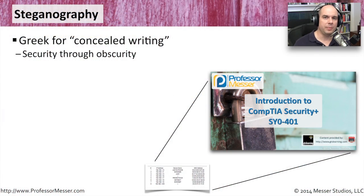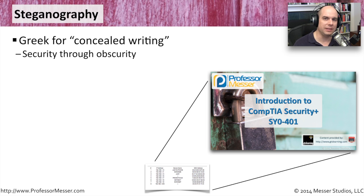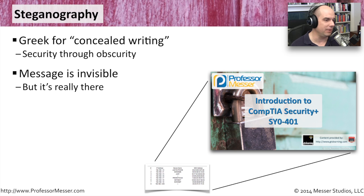Steganography is a way to encrypt or hide information, yet have that information right there in plain sight the whole time. It's derived from a Greek word that means concealed writing, and it is a way to secure things by making them obscure — which in reality isn't true security. If you really know what to look for, you can very often find these things. But if you hide what you're doing inside of something else, it makes it much more difficult to obviously see right in front of you. The message is seemingly invisible, but it really is right there.